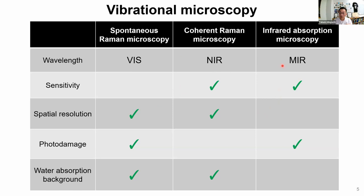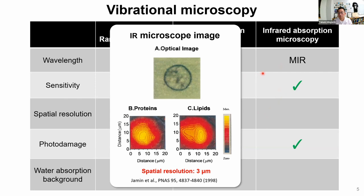Not many people use infrared absorption microscopy for cell measurement because of the poor spatial resolution due to the longer wavelengths of light. If you use infrared absorption microscopy for cell measurement, you get images where the spatial resolution is only a few micrometers, while a cell is 10 to 20 micrometers, so you cannot resolve intracellular structure at all. But the information from infrared absorption is complementary to Raman scattering data, making it very interesting for cell measurement.